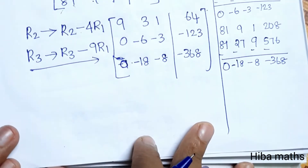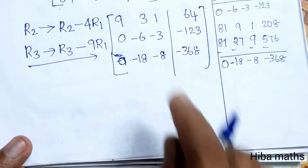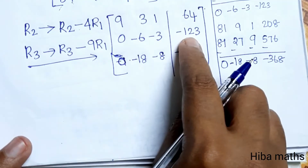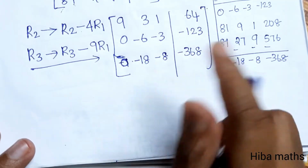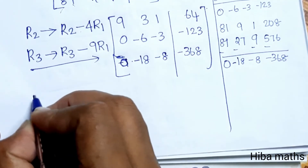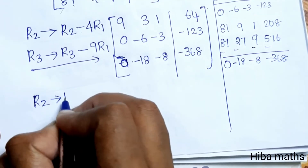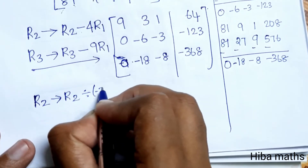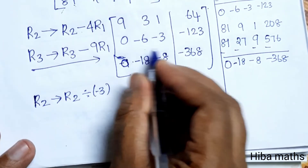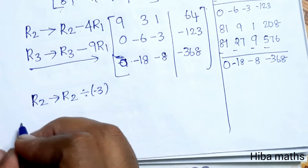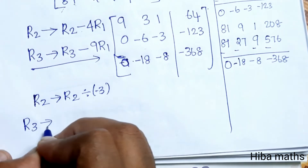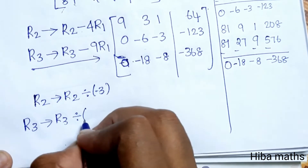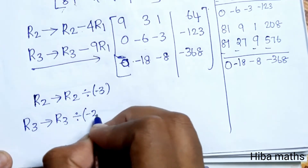Now we simplify the rows. We change R2 by dividing by -3, and R3 by dividing by -2, to get simpler coefficients.